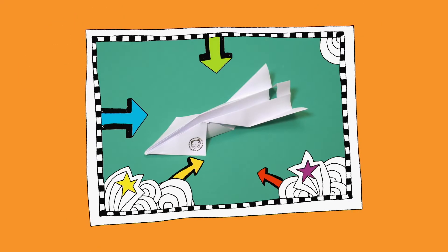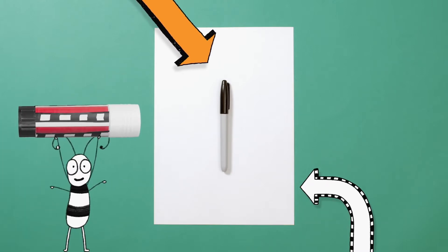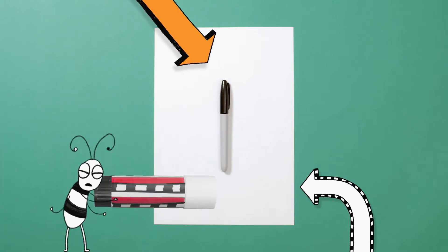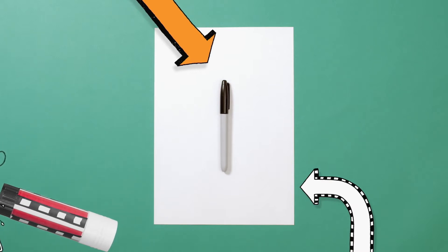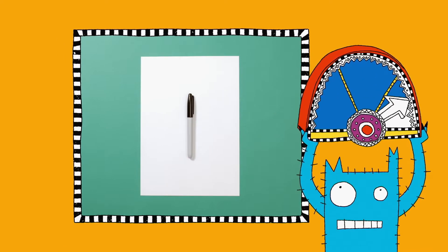If you want to make Leroy's perfect paper plane, this is what you need. Paper, pens to decorate, and a glue stick. Oh, we don't need any glue. Alright, sorry. There we go, make sure you've got all that.